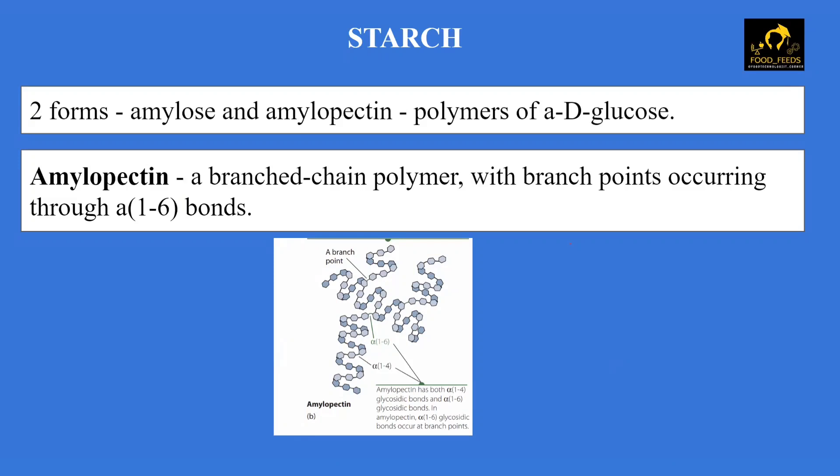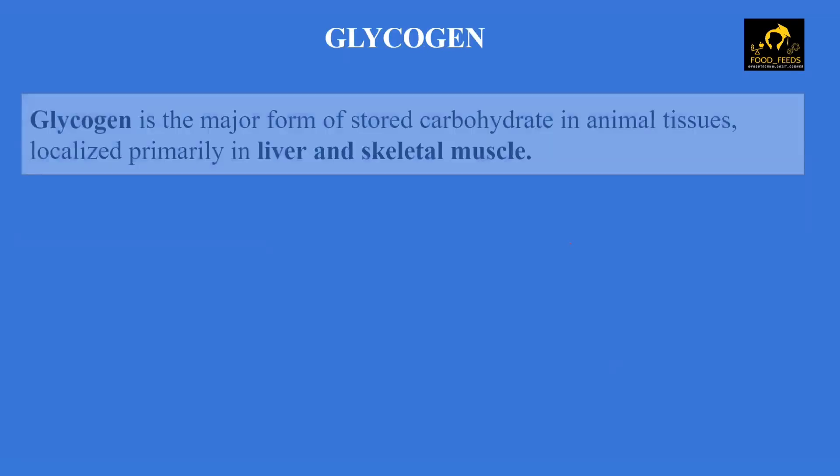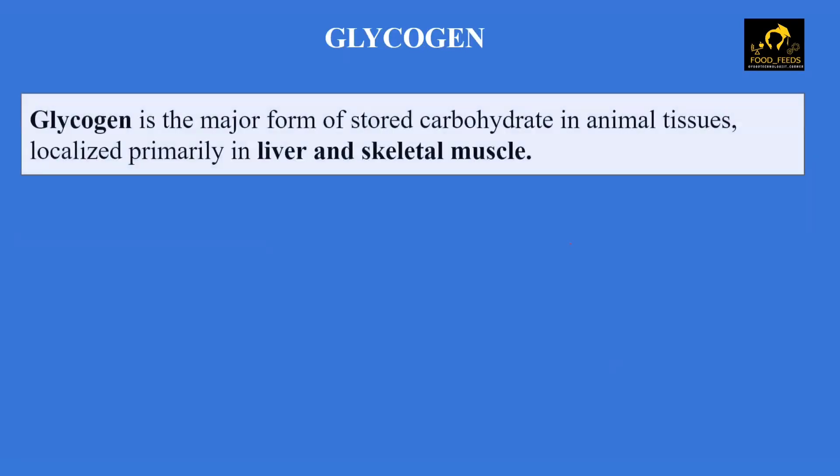Moving on to glycogen. The structure of glycogen is very similar to amylopectin in that it is branched, but it is more highly branched compared to amylopectin. Glycogen is the major form of stored carbohydrate in animal tissue, and most of it is found in the liver and skeletal muscle.